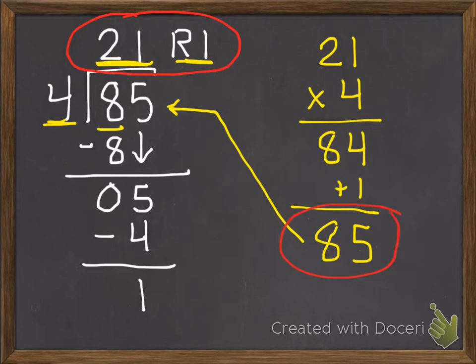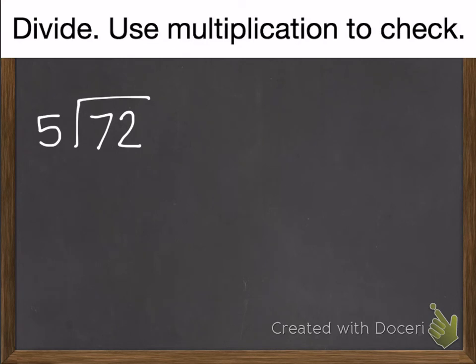One more example. 72 divided by 5. Start with my tens. There's one that I can give out because I have 7 things. This leaves me with 2 tens left. I bring down my ones, add it to my 2 tens.